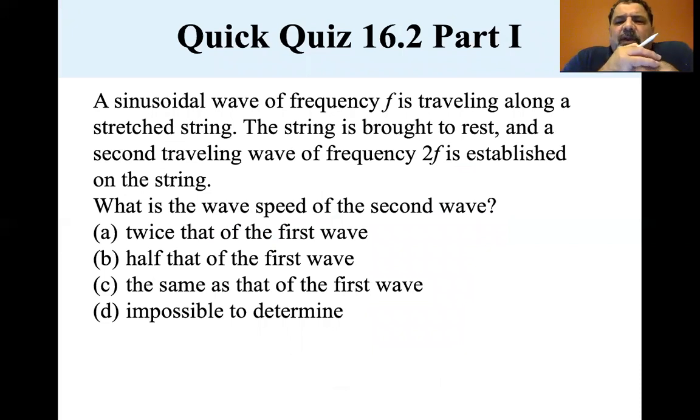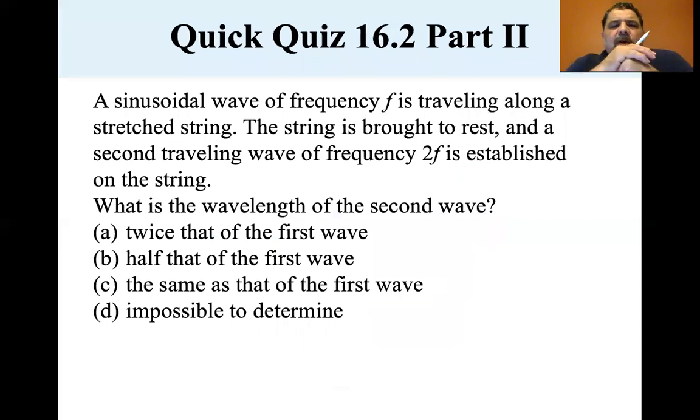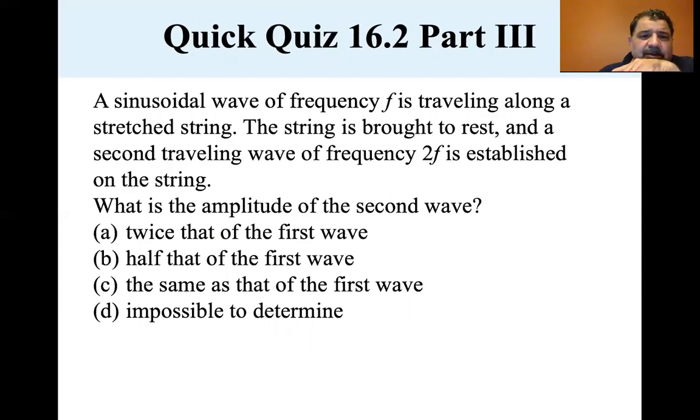Now let's look at this. A sinusoidal wave of frequency f is traveling along a stretched string. The string is brought to rest, and a second traveling wave of frequency two f is established on the string. What is the wave speed of the second wave? Well, it's the same as the first, the wave speed doesn't change. Now a sinusoidal wave of frequency f is traveling along a stretched string. The string is brought to rest and the second traveling wave of frequency at two f is established on the string. What is the wavelength of the second string? In the wavelength, let me make sure I got it. It's half, half that of the first wave. Okay. And let's go to the same situation. What is the amplitude of the second string? Well, that amplitude isn't part of this, isn't given in this part of the equation. So it's impossible to determine.